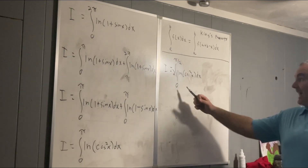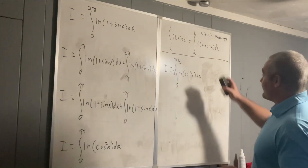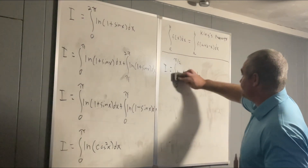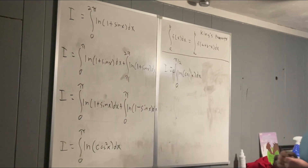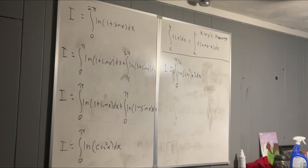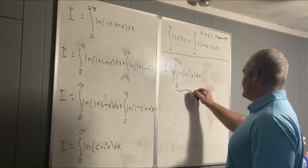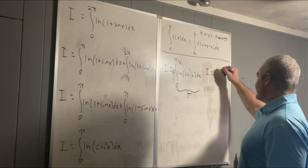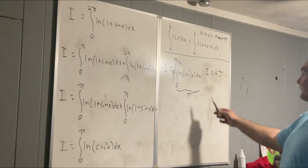On the interval 0 to π/2, the cosine function is never negative, so we can safely bring the 2 out of the logarithm now. That gives us i equal to 4 times the integral from 0 to π/2 of the natural log of cosine x dx. Let's label this integral j, giving us i equal to 4j. We just need to figure out what j is.